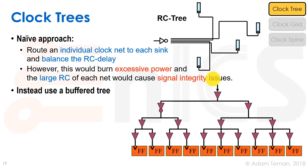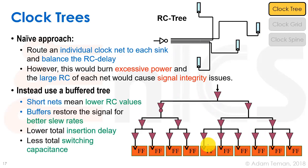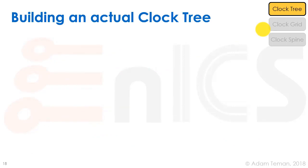What we want to do instead is use a buffered tree where each section is driven by a buffer that drives more buffers and so forth. This is a much better solution: shorter nets mean lower RC values, each buffer restores the signal providing better slew rates, and total insertion delay actually goes down because RC delay increases squared over a long net. We also get less total switching capacitance. So we're going to build things with buffered trees.